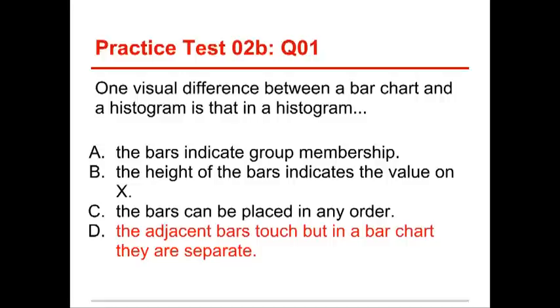So a histogram, they're all put together because it's a quantitative variable, and so you're just making these sort of arbitrary bins where you draw a line and say, people below this line go into this bin, people above this line go into this bin. But in a bar chart, they're separate because their order is arbitrary. They can be changed. You can put men before women, women before men, it doesn't matter.